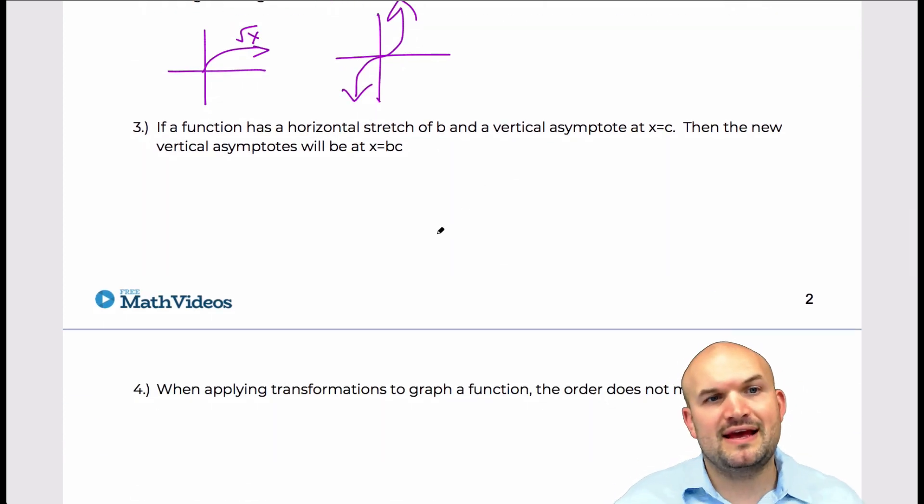The next one says, if a function has a horizontal stretch of b and a vertical asymptote at x equals c, then the new vertical asymptotes will be at x equals b times c. So basically, when we apply some kind of stretch or compression, that's going to be affecting our asymptotes.